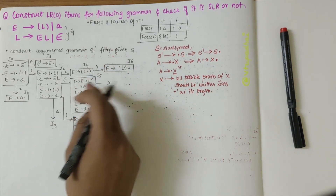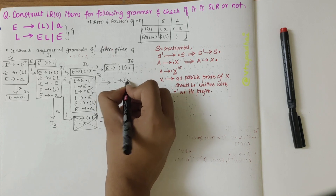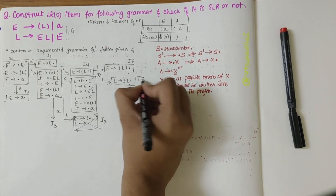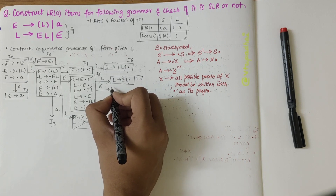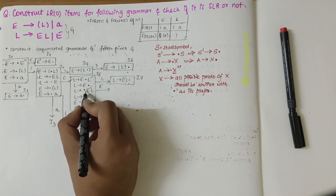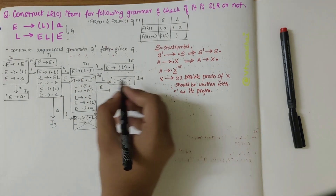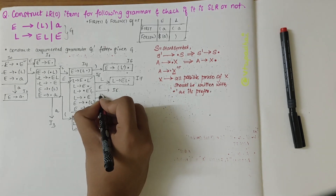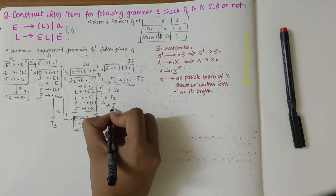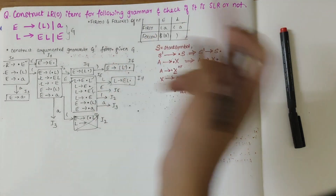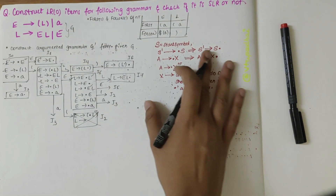Moving on to I5 items. Over L, I get L derives E L dot, which I write as I7. Over E, I can write L derives E dot — already done. Shifting that dot gives E dot L, which is similar to I5 itself. So over E, I get I5 itself. Over open bracket, I get I2. Over A, I get I3. I6 and I7 cannot produce further new items. I am done constructing the augmented grammar G dash.